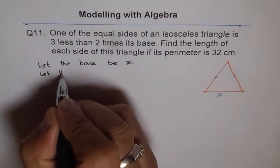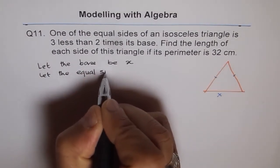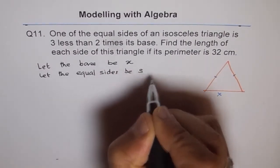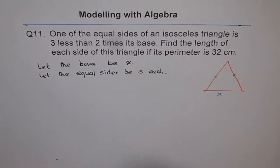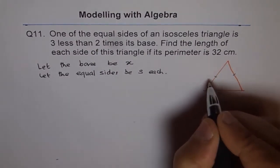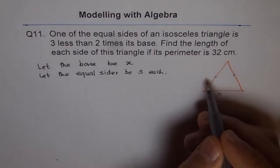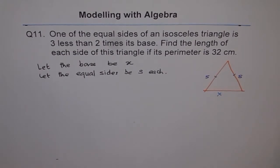Let the equal sides be s each. So let's say this is x and these sides are s and s. It helps sometimes to write two variables.